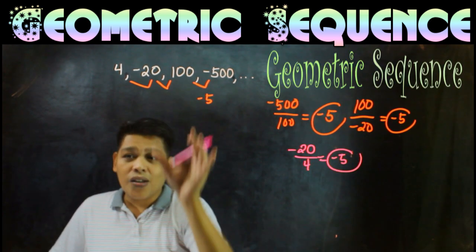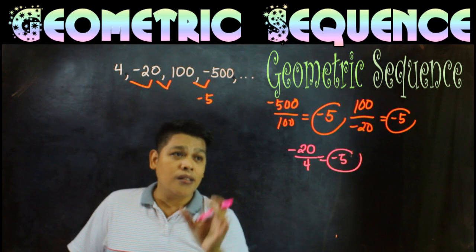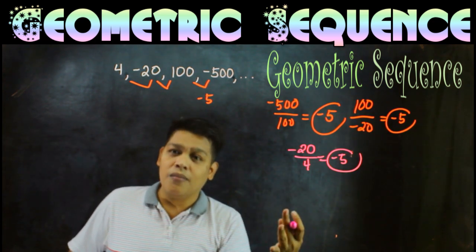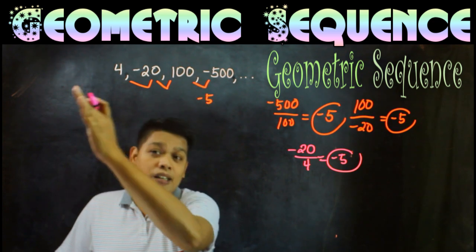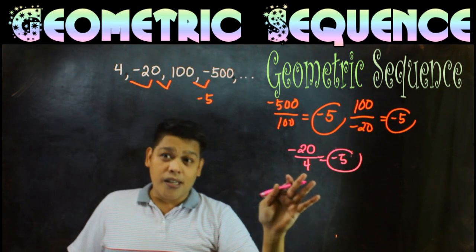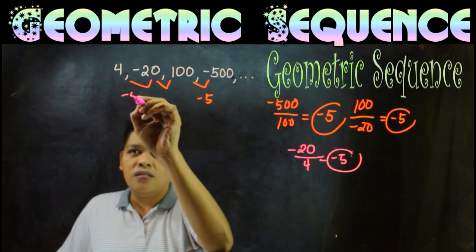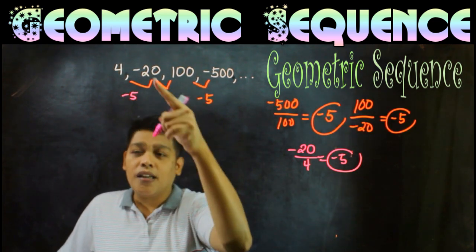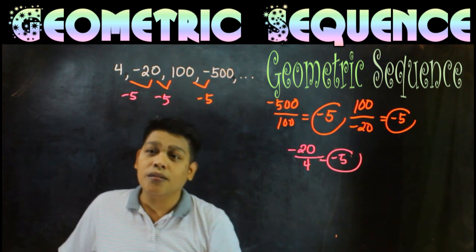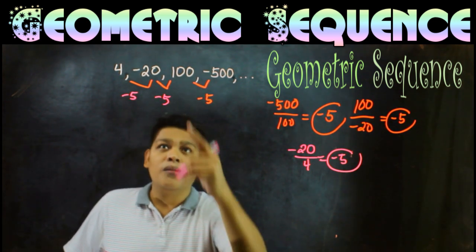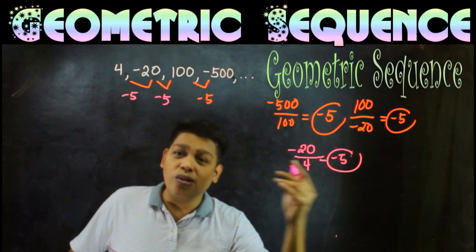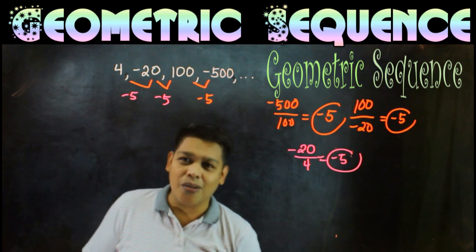This means this sequence is geometric sequence, which has a ratio of negative 5. When you go to the left, you divide by negative 5. When you go to the right, you multiply. So 4 times negative 5 is negative 20. Negative 20 times negative 5 is positive 100. 100 times negative 5 is negative 500, and so on. This is an example of geometric sequence.